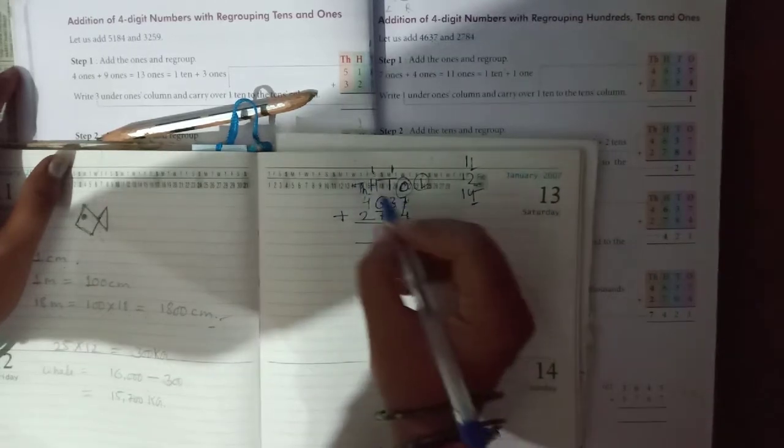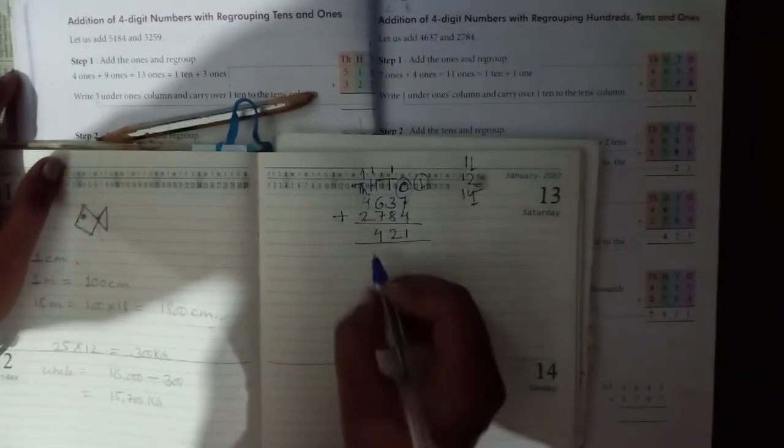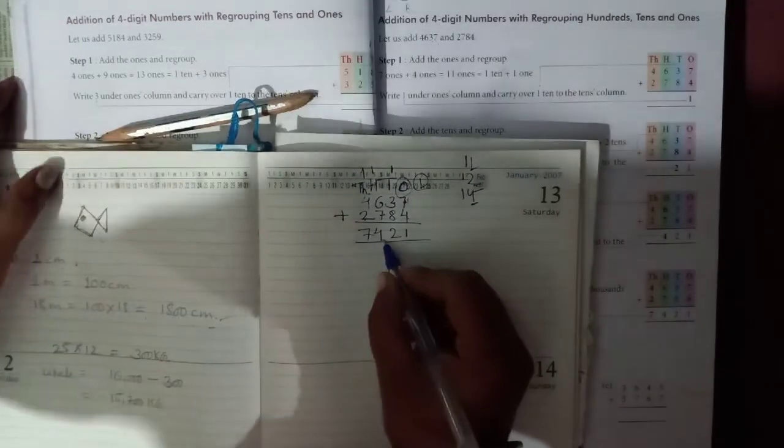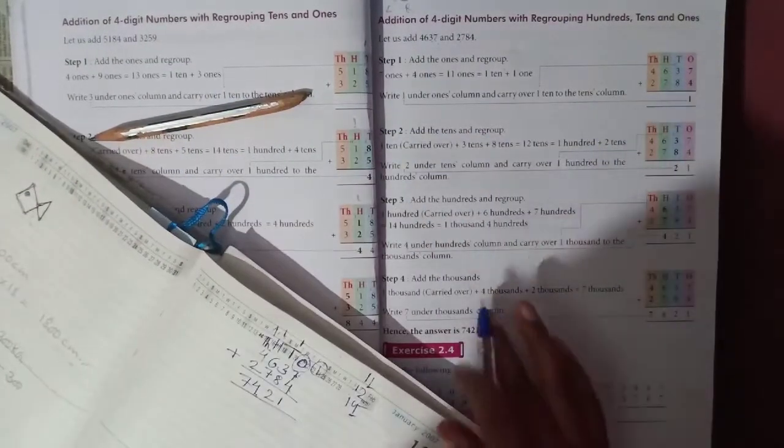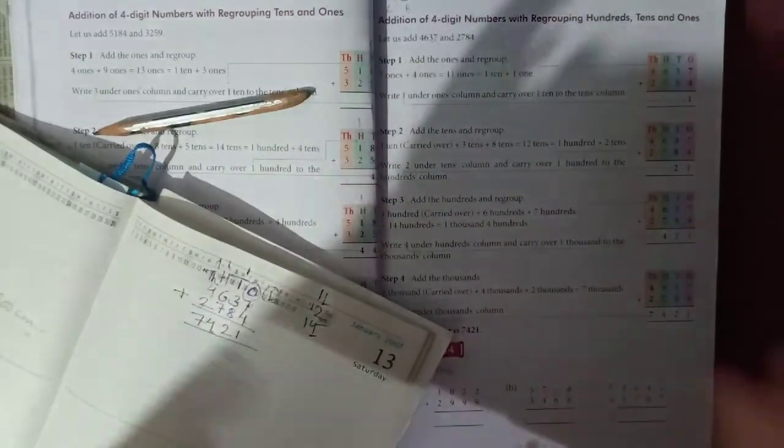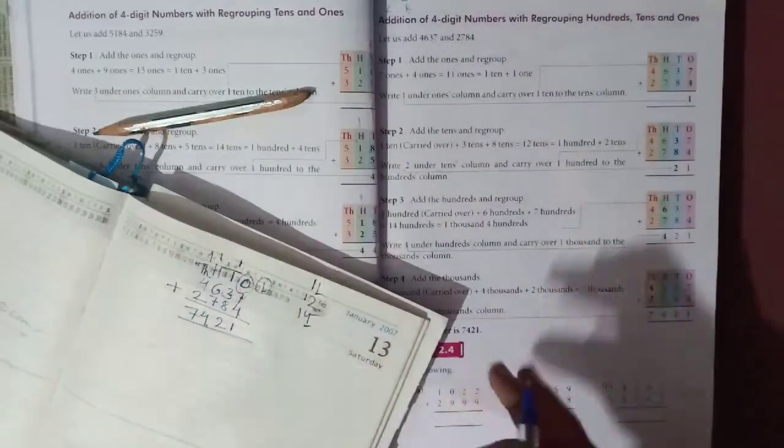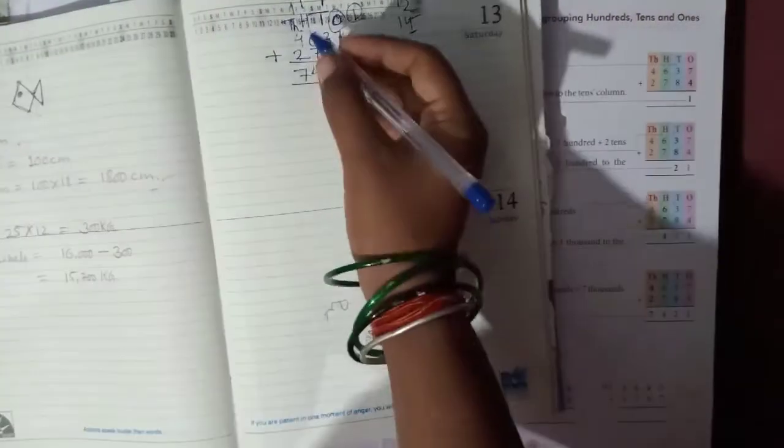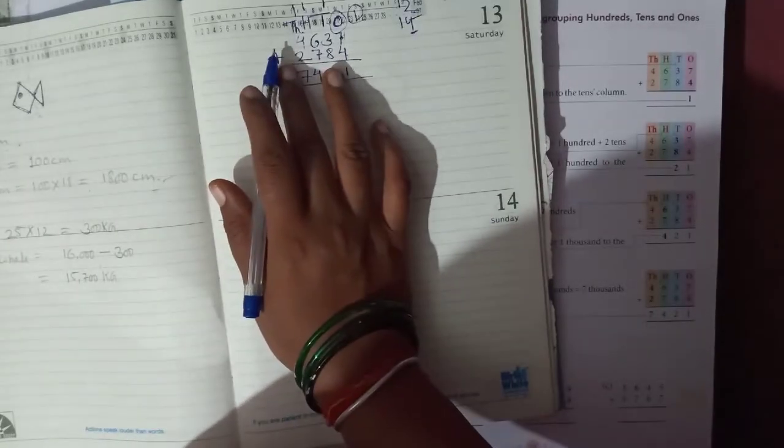Four plus two is six, plus one is seven. So we can calculate it like this. They are also giving you the same steps. They are telling in one step you will add ones and regroup, then add the tens and regroup, then add the hundred and regroup, add the thousand.